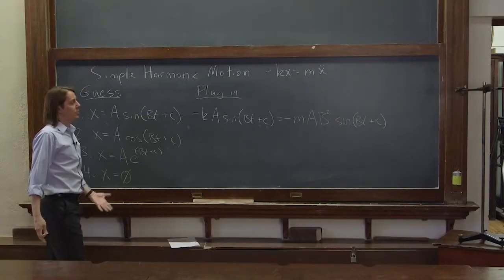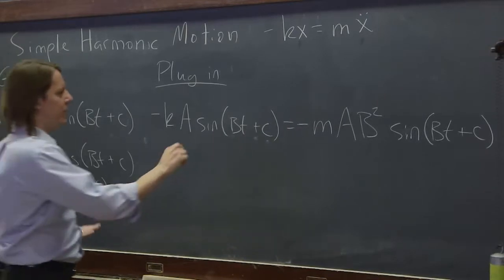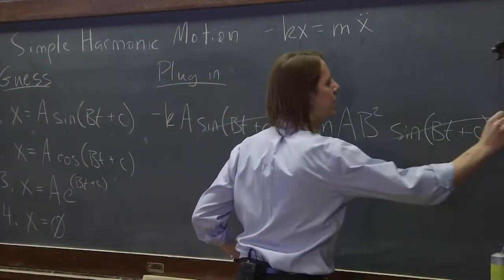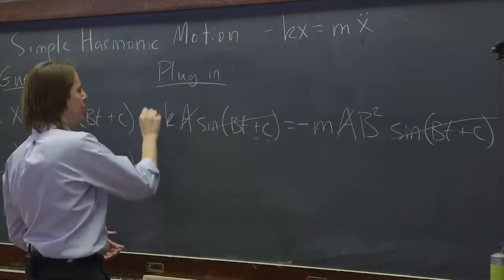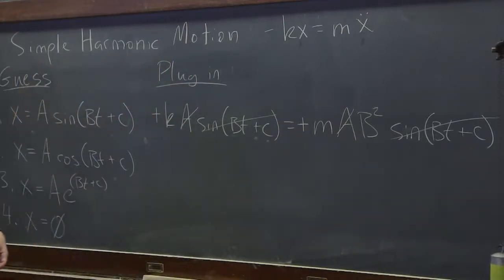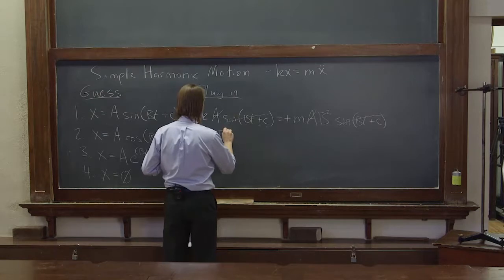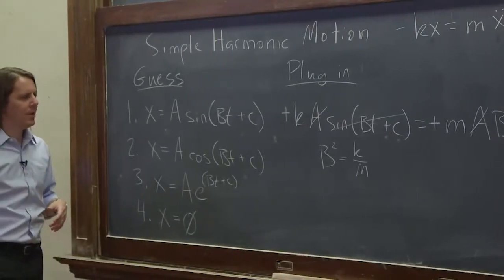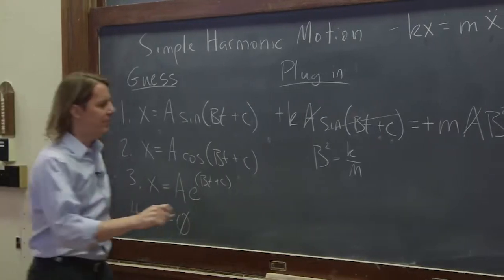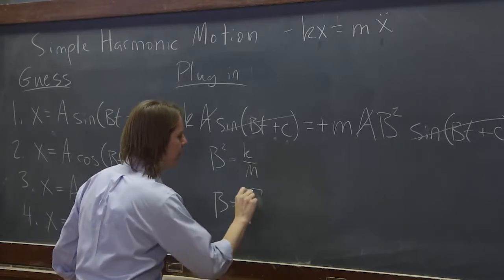So was it a good guess? Well, it's a good guess if this is true. Is this true? Well, let's see. We can start canceling things. We cancel the sine. We can cancel the a, and the two minuses go away and become plus. And we see it's a good guess if b squared is k over m. So basically, it's a good guess if b is the square root of k over m.